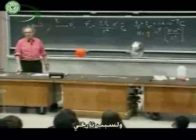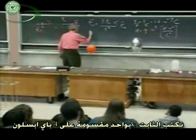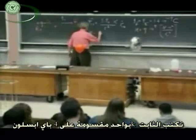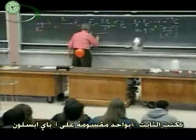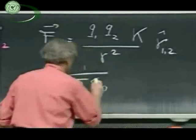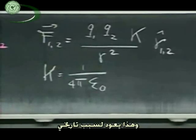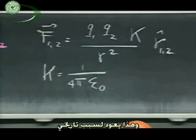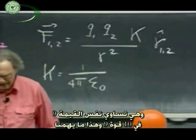For historical reasons, which may at times be a pain in the neck for you, we write K as one divided by four pi epsilon zero. There is nothing magic about that — it's just a historical reason. And so one divided by four pi epsilon zero equals nine times ten to the ninth. That's all that matters.